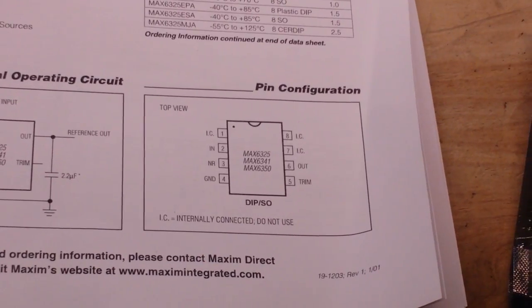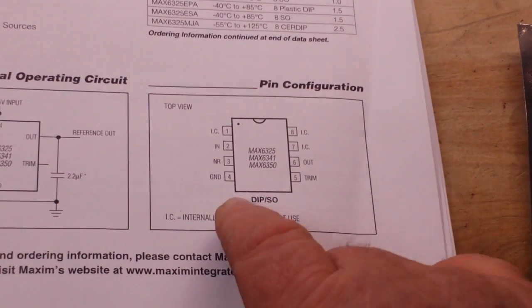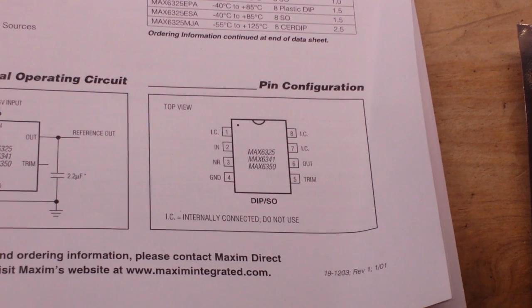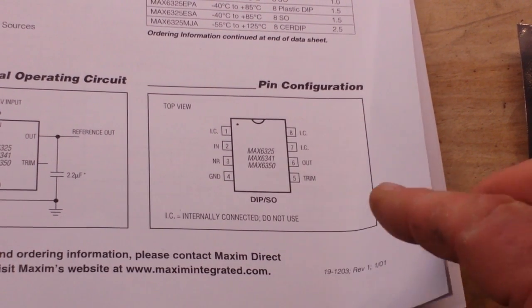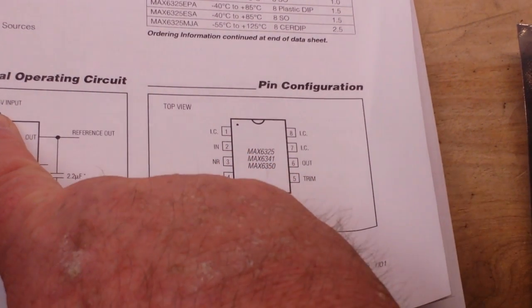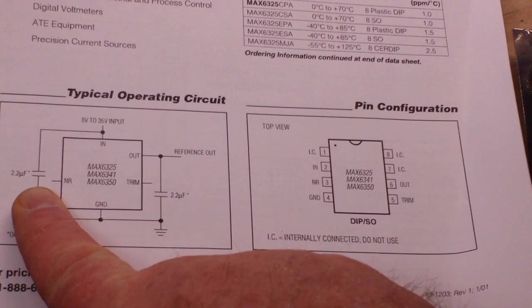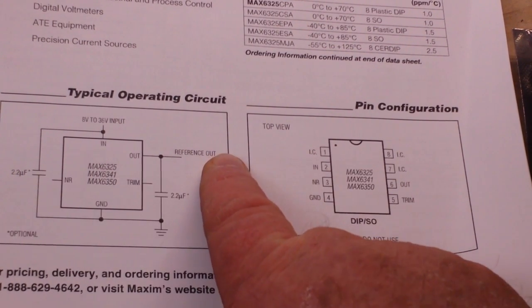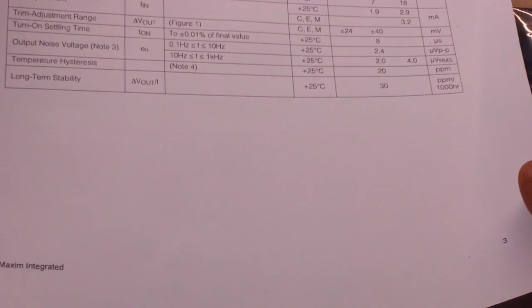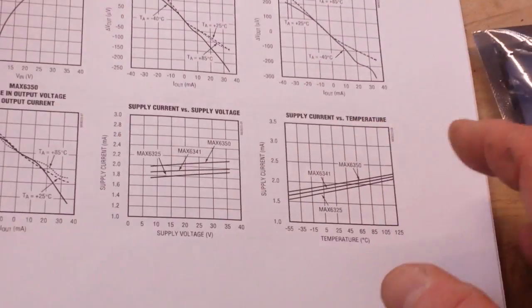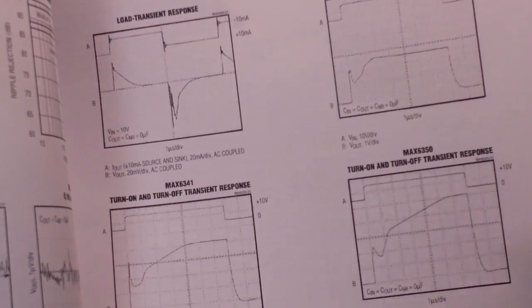Here you can't see what I'm doing again. I need an assistant here with a ruler just to smack me when I don't have stuff in camera. Internally connected, do not use. So pins 1, 8, and 7 we don't use. Ground, trim, and out - that's all we use. I'm guessing... interesting. Oh, in! So we have 8 to 36 volts input with a 2.2 microfarad cap across at the ground, and then our reference out with another 2.2 microfarad cap to ground. Lots of information, electrical characteristics, graphs.